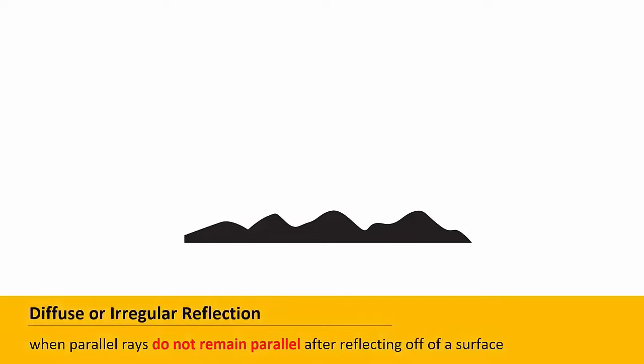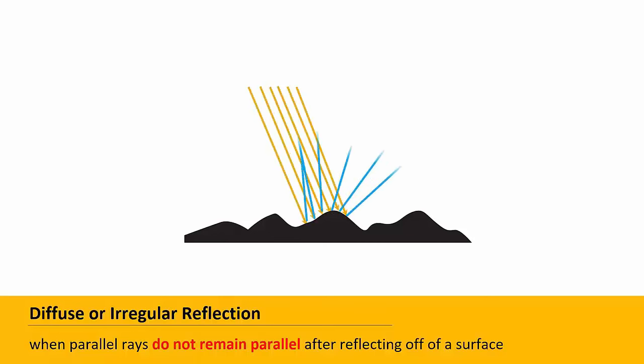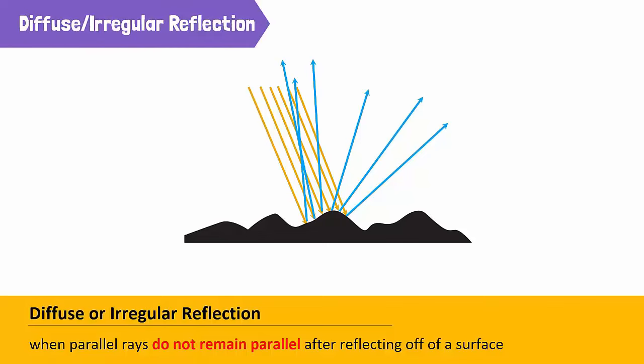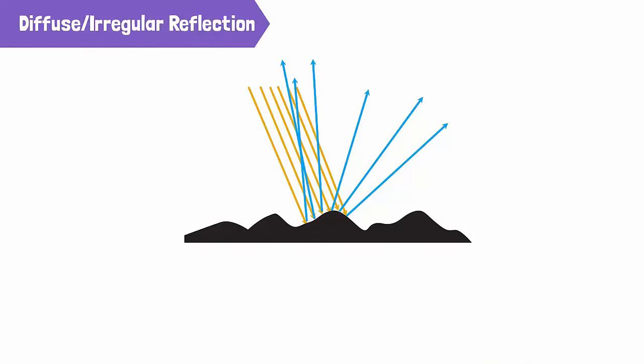When a parallel beam of light falls onto such a rough or irregular surface, the reflected rays do not remain parallel after leaving the surface. This type of reflection is called an irregular or diffused reflection of light.